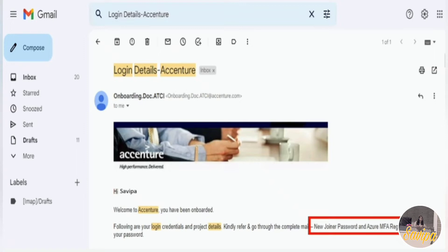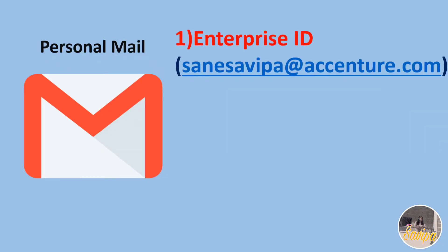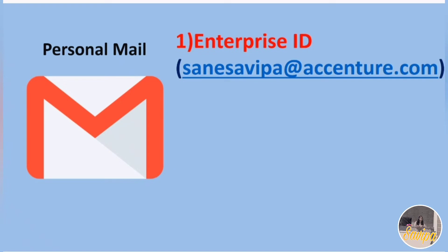You will receive this mail in your personal email ID — the one with which you registered with Accenture. Before you get access to Outlook, you need to have a Microsoft account. In this mail, they will provide your Enterprise ID, which is your username followed by the domain name accenture.com.